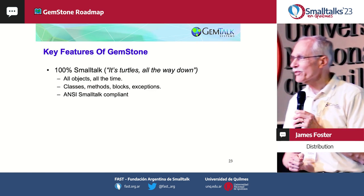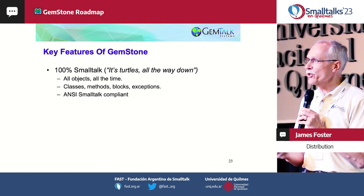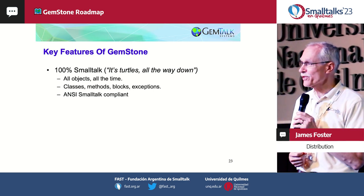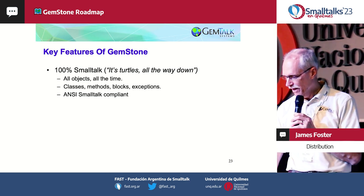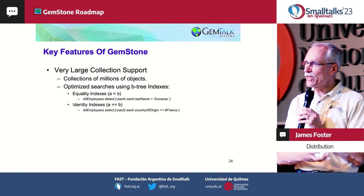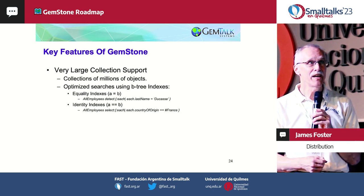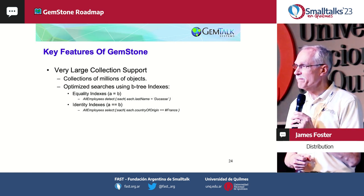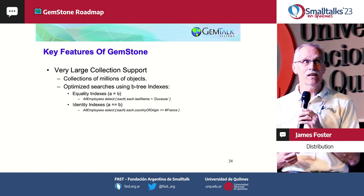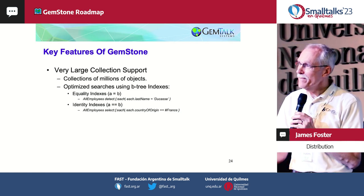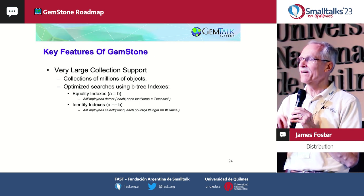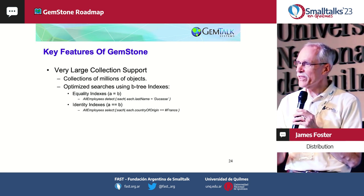Of course, it's still Smalltalk — turtles all the way down. The way that you interact with the database: all objects, classes, methods, metaclasses, blocks, exceptions — we are, as far as we know, ANSI-compliant in all things. Large collections is probably the primary thing you would expect to be different for a database. Millions of objects could be in a collection, and to handle that efficiently, we support indexing using B-trees. So even if you have hundreds of millions of objects in one collection, a select or detect can be done with extreme efficiency.